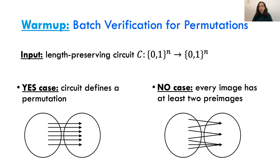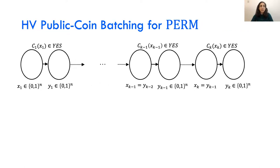Before we introduce approximate injectivity, we start with a warmup of batch verification for permutations. The input is a length-preserving circuit. The yes cases are circuits that define a permutation. The no cases are circuits that are far from defining a permutation in terms of injectivity — meaning for no cases, every image has at least two pre-images.